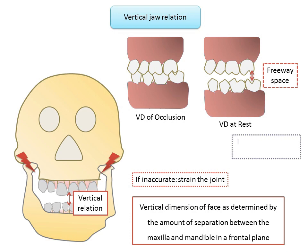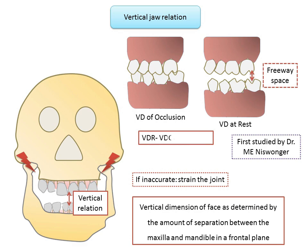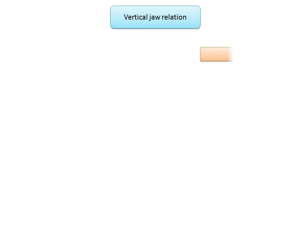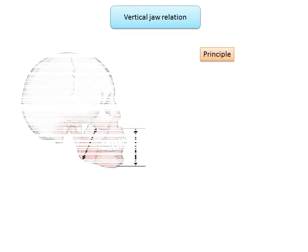Freeway space, or interocclusal rest space, was first studied by Dr. M.A. Niswonger. It ranges from 2 to 4 millimeters in the vertical direction at the position of the first premolar.